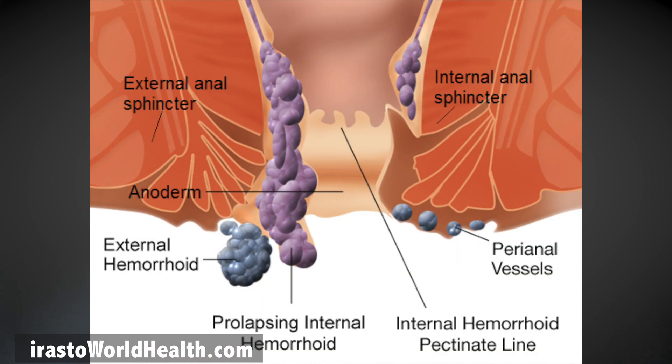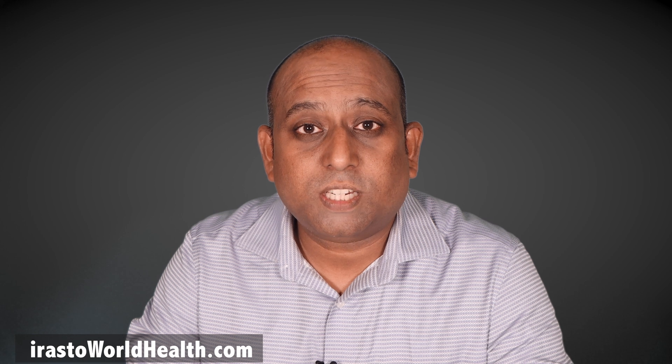any lumps, any prolapsing internal hemorrhoids, or skin tags. External inspection gives a clue to many other disorders such as fistula tracts and fissures, and to rule out other diseases.